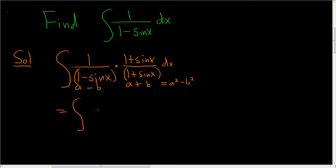So in the numerator, we just get 1 plus sine x, no problem there. In the denominator, we have a squared, so a is 1, so 1, minus b squared. So b is sine x, so minus sine squared x dx.